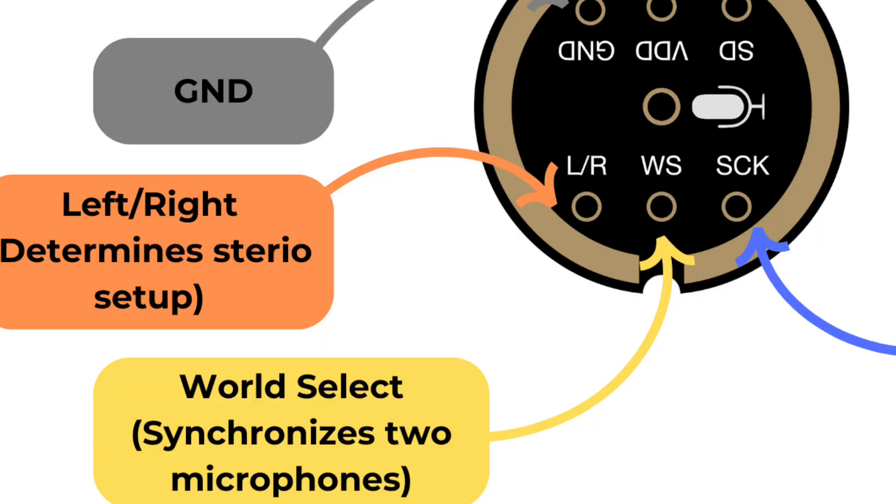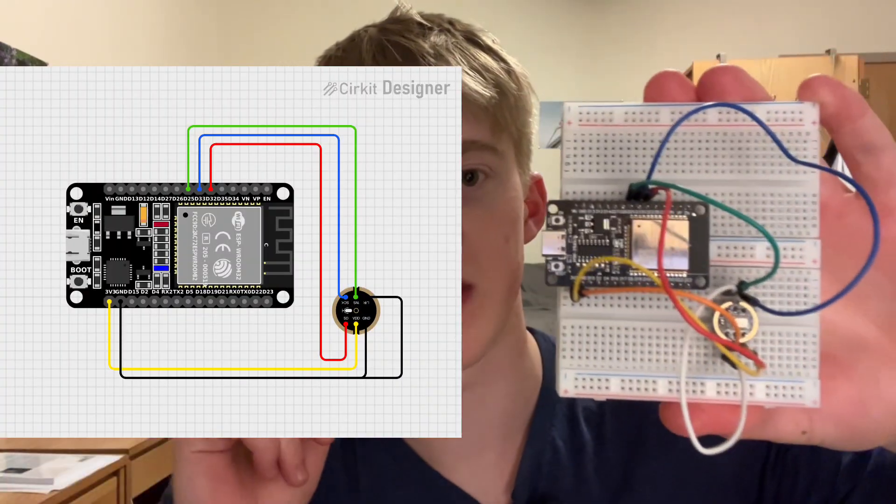The way you select between left and right is by either applying 3.3 volts or ground — in my case, ground is for the left channel. Then we have the Word Select pin, whose purpose is to switch between the left and right signal of the microphone. Since I'm only using one microphone, I'm selecting only the left, so I have this hooked up to a pin on my microcontroller that pulls it down to low. The microcontroller I'm using is the ESP32 WROOM. Here's what the circuit looks like — here's a diagram right here — and let's get into coding so we can visualize some of the data coming in from the microphone on the serial console.